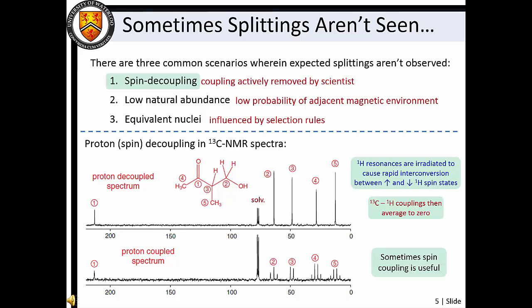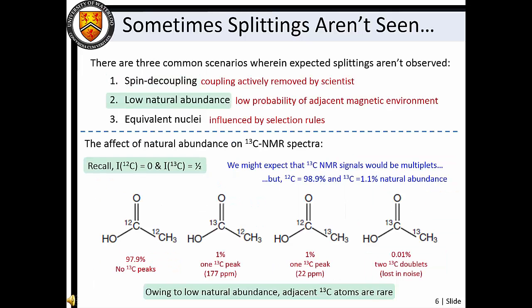Proton decoupling is often employed in carbon-13 NMR to simplify spectra. We must also keep in mind that sometimes the nuclei that we are interrogating, like carbon-13 for example, have very low natural abundance. As a result, it is statistically very unlikely for two carbon-13 nuclei to be in close enough proximity in a molecule to interact with one another.